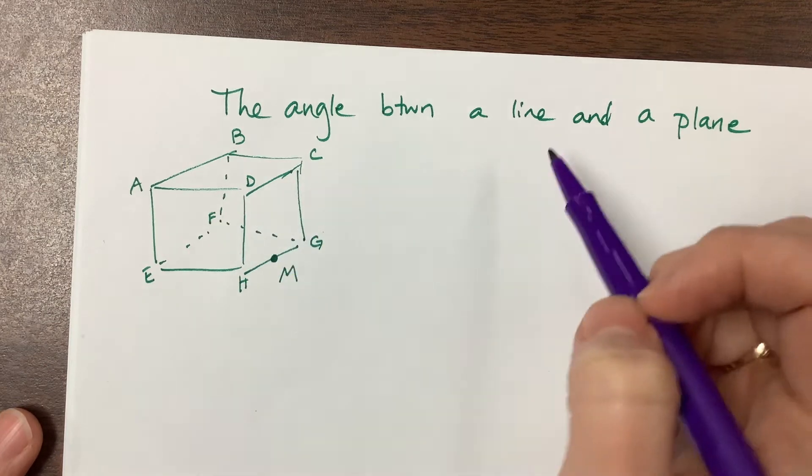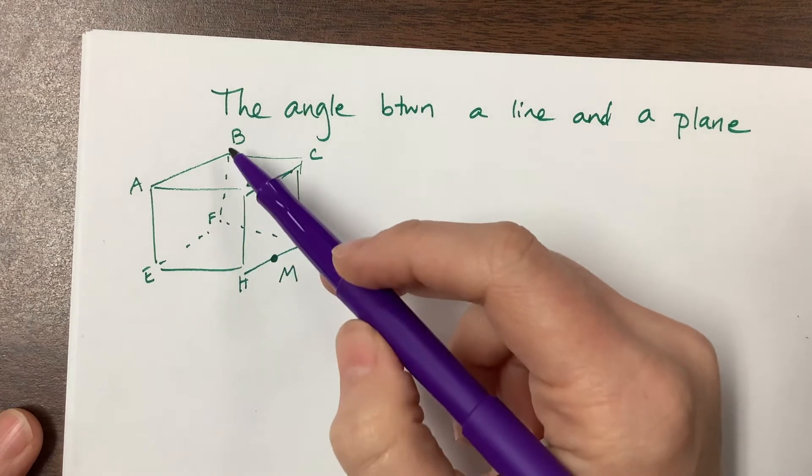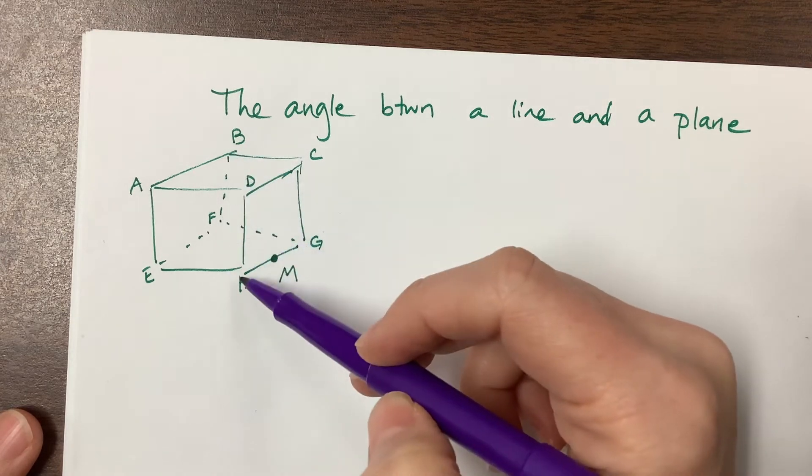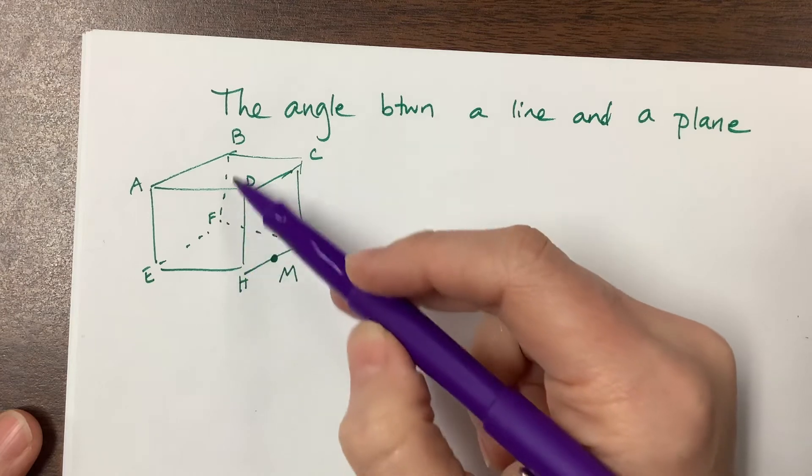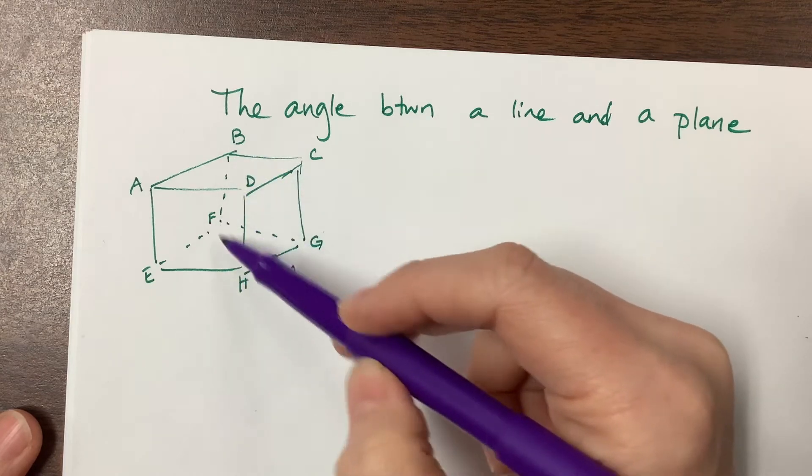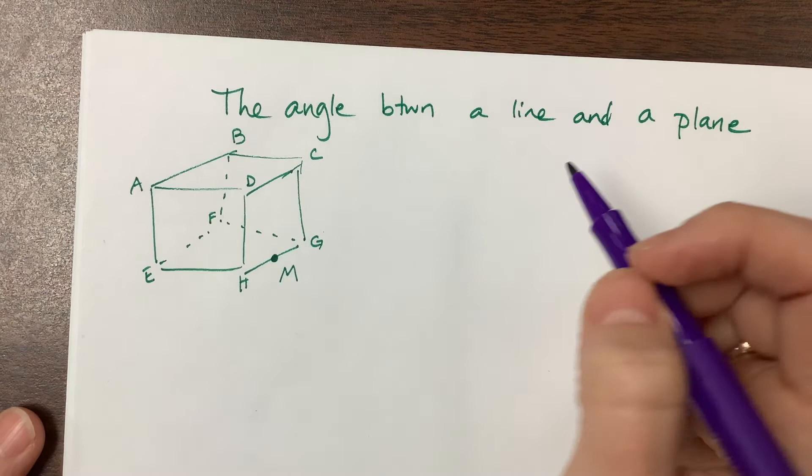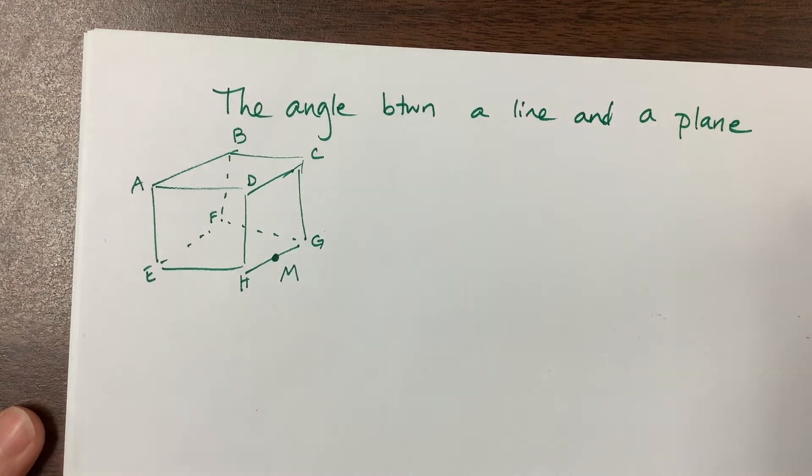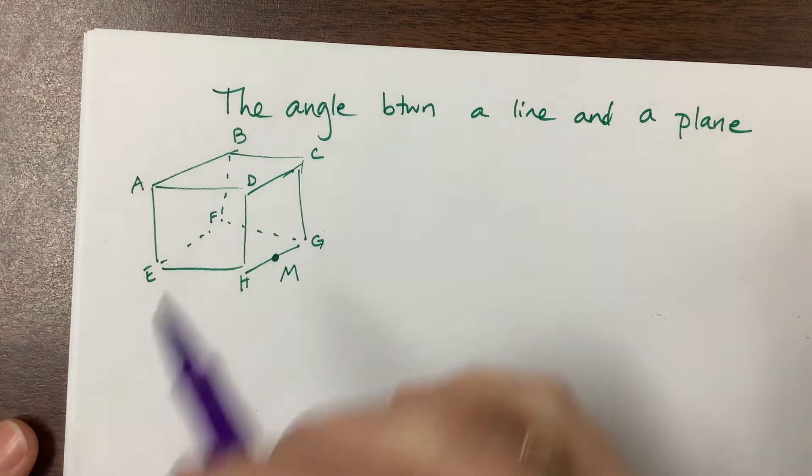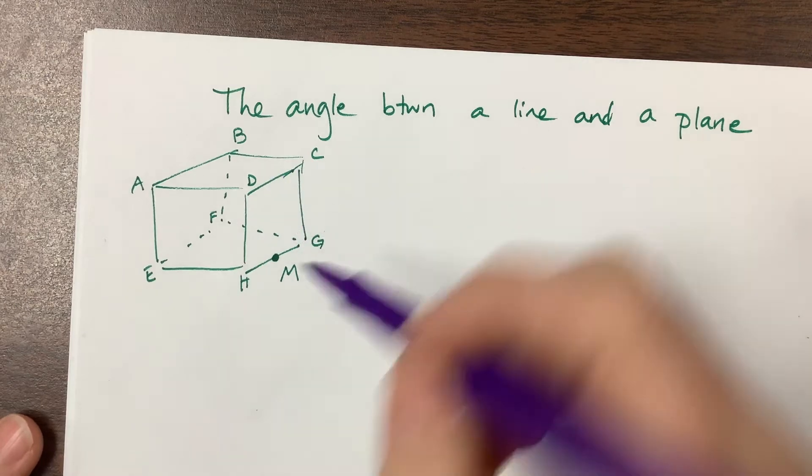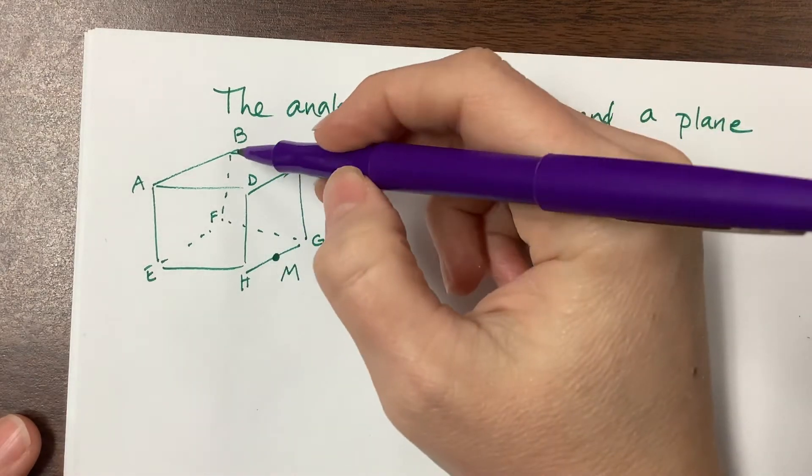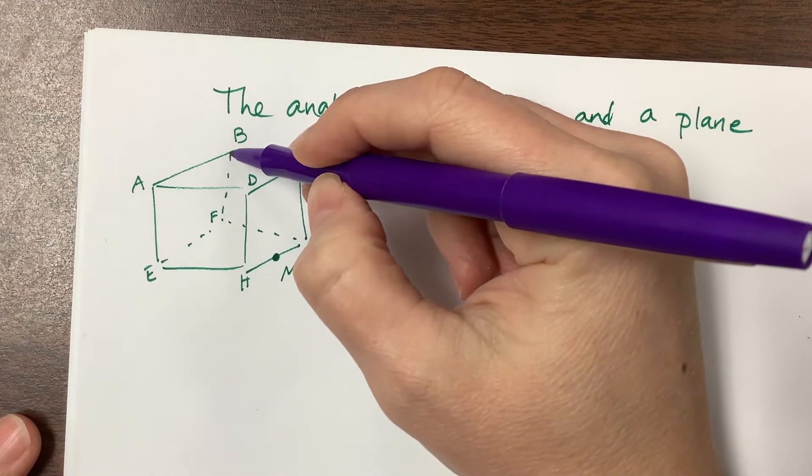So to find the angle between the line and the plane, you would look at angle BHF to find that angle between line BH and the plane that's the base of this figure. They also might ask, for example, for the angle with line BM.